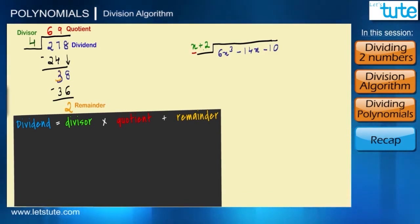So we will ask the question: what times x will be 6x³? x into 6x² is 6x³, as we get a number in the quotient. So this means we are multiplying 6x² by x + 2 and not just x. So now we'll take the second term: 2 into 6x² will be 12x². So first we multiplied 6x² by x and then by 2.